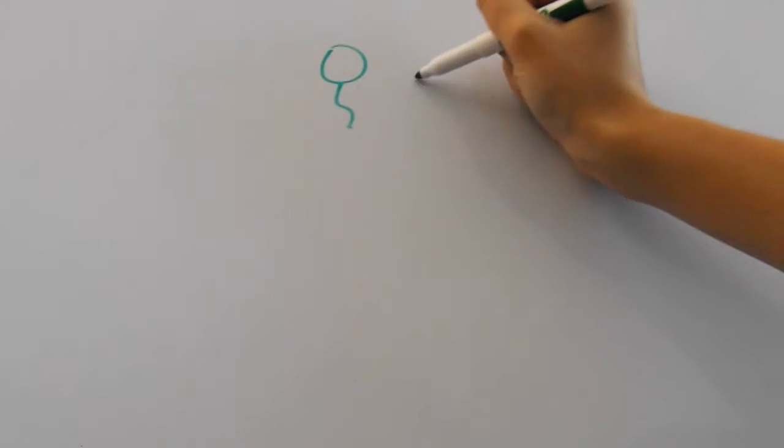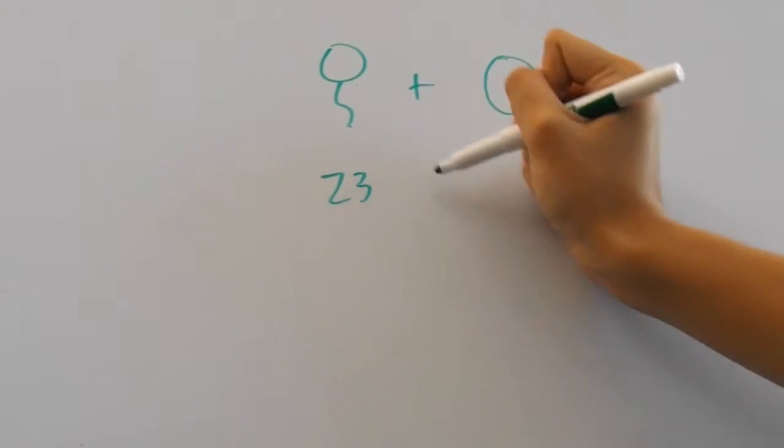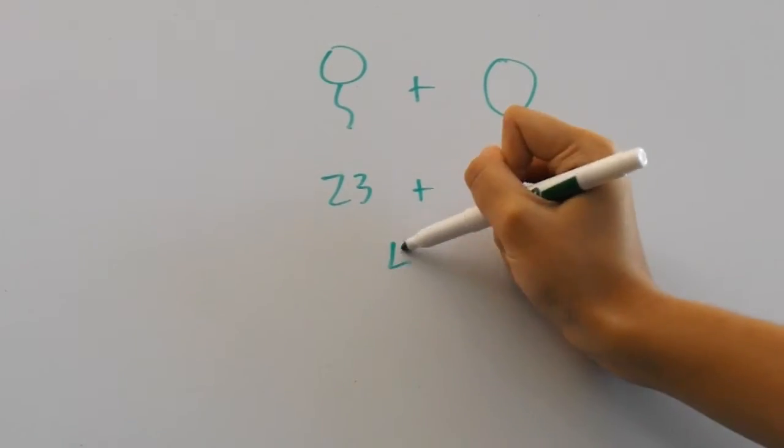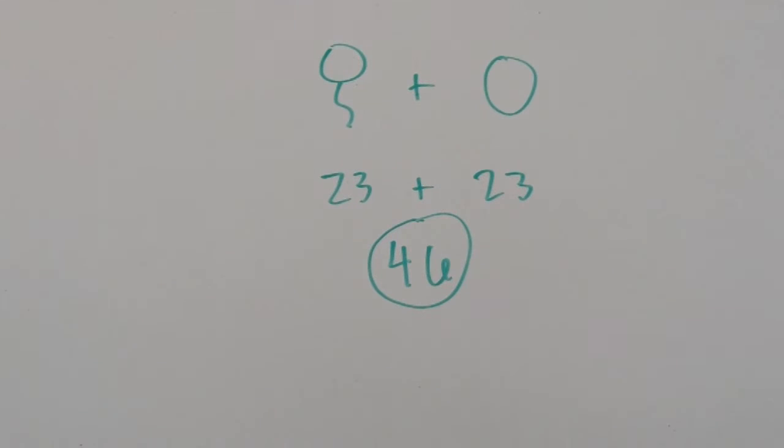The reason for this half number in meiosis is for a zygote to develop. One gamete from each parent donates 23 chromosomes each, resulting in a 46 chromosome zygote.